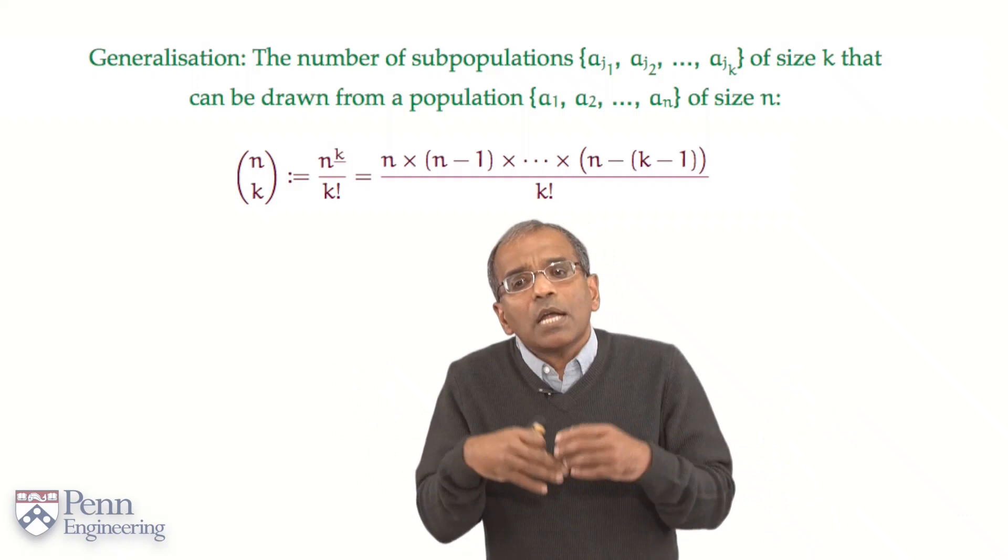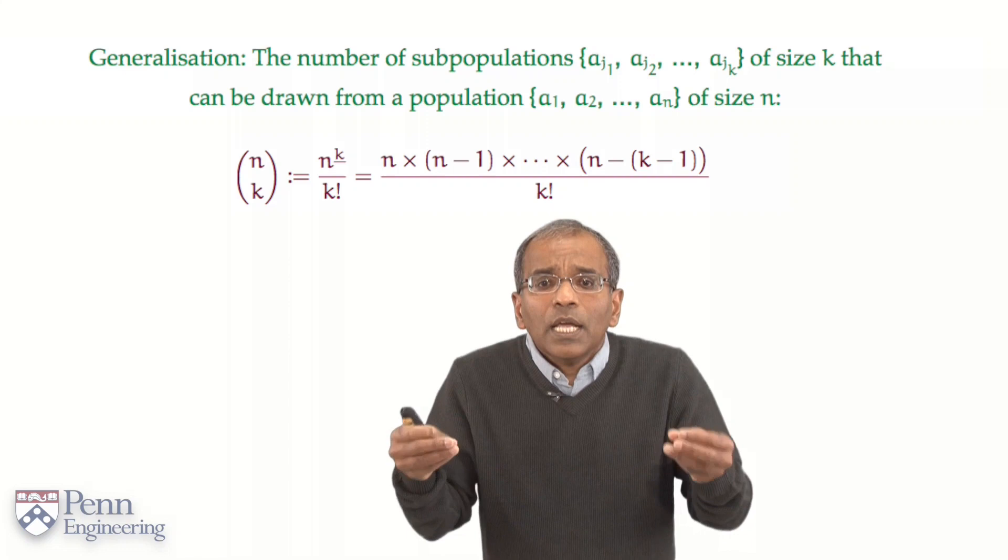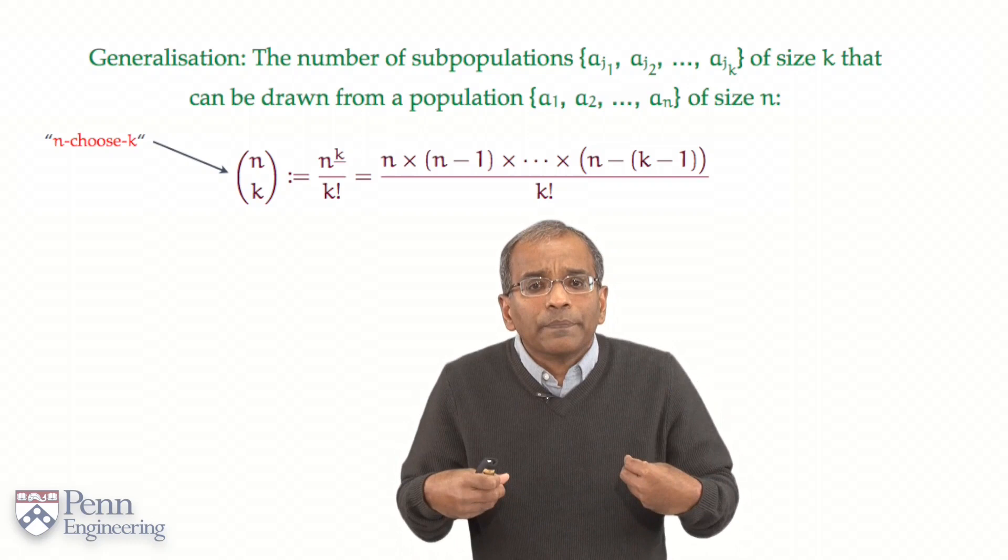Divide by k factorial. And that exactly is going to be the number of ways in which you can select k objects out of n. n choose k.